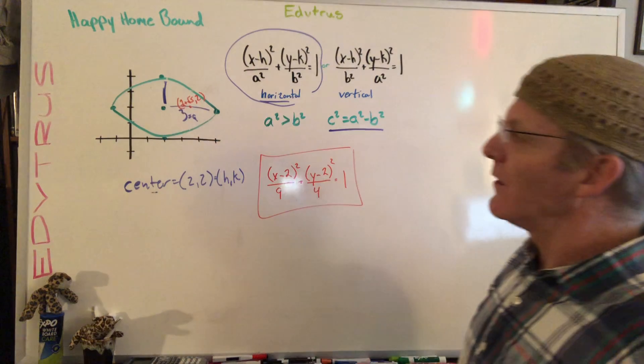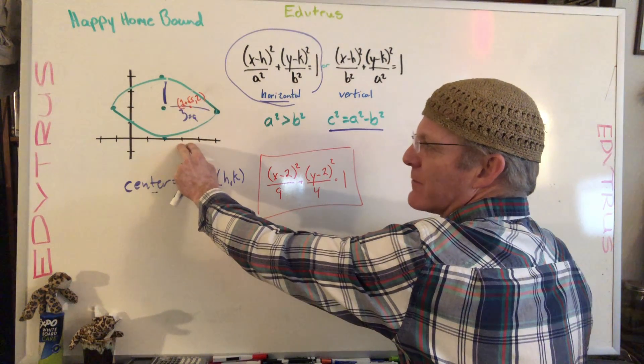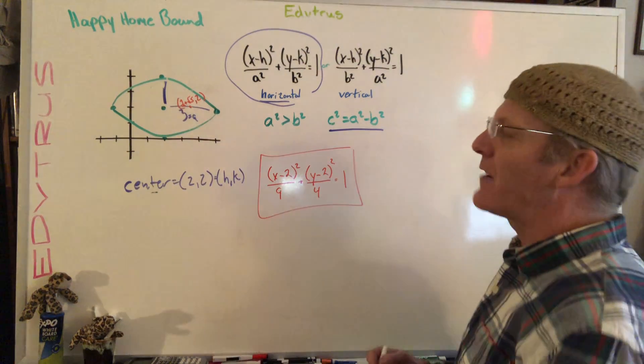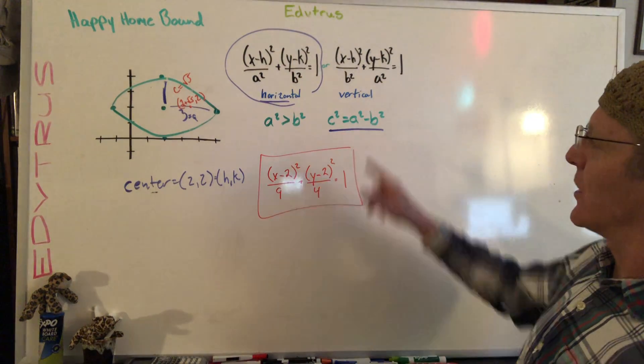So that distance for C is the square root of 5. So C equals square root of 5.